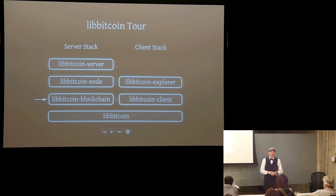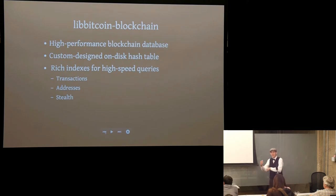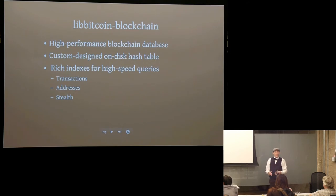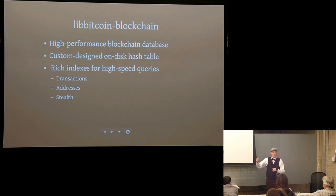The next layer up is LibBitcoin blockchain — a database custom written from scratch specifically for holding the Bitcoin blockchain. Unlike a traditional database, the blockchain is append-only: gigabytes of data that never change, with changes only at the end as new blocks and transactions are added. So they designed a database from the ground up for that model, making it super fast for that specific use case, with rich indexes for transactions by hash, by address, blocks by height, and more.